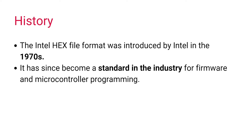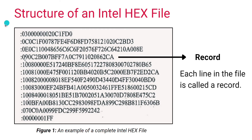Another type of hex file format is the Motorola hex file format, but in this video we will be focusing on the Intel hex file format. This is the basic structure of an Intel hex file — this is a snippet of a complete Intel hex file. We can see that there are a number of lines, and each of these lines is said to be a record.